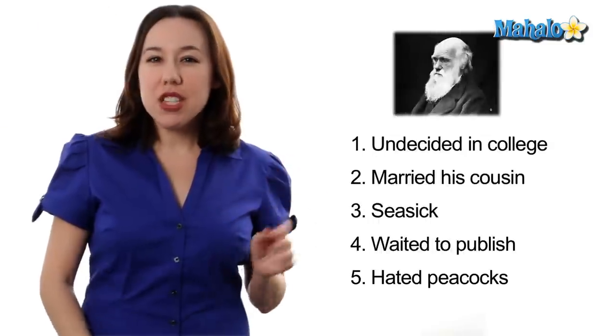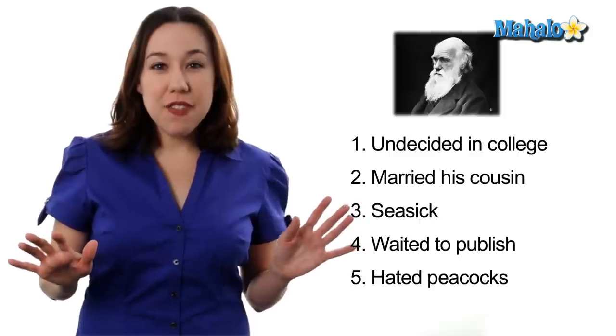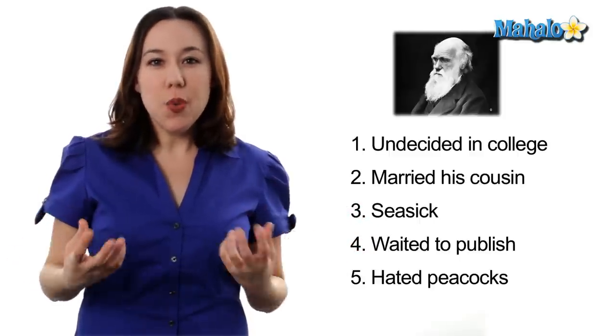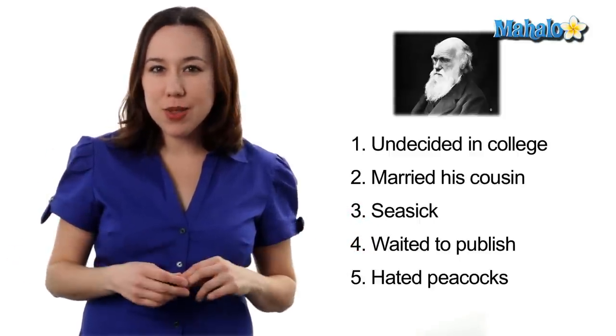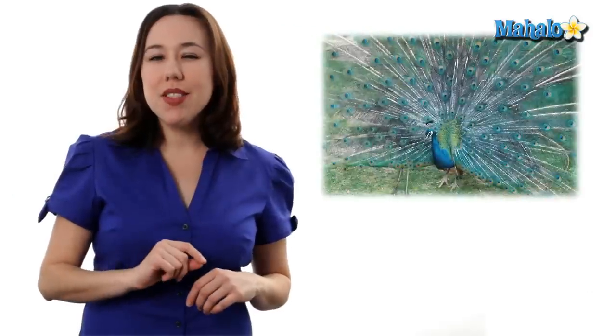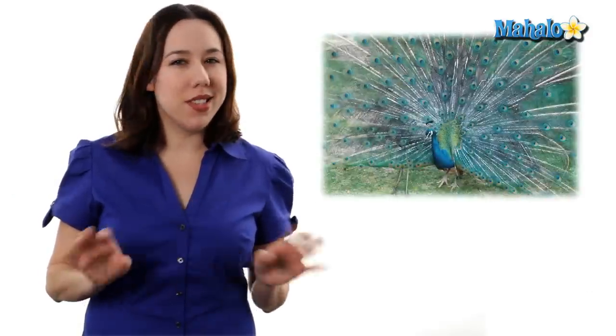Number five, Darwin hated peacocks. He felt the extravagance of the tails was completely against his evolutionary ideas about natural selection. It was said the sight of a peacock made Darwin sick.